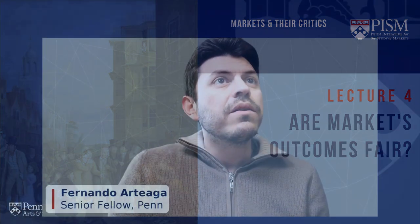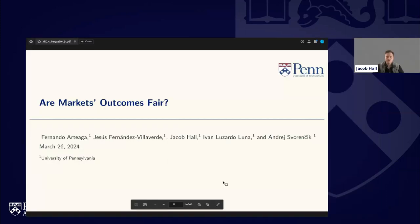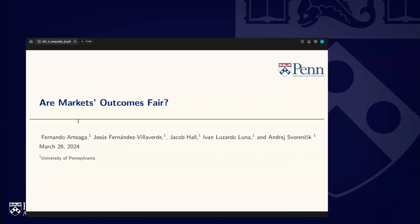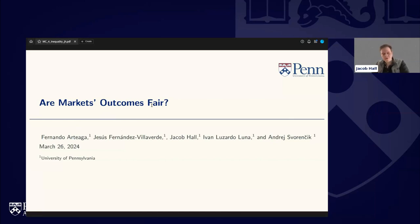Thank you everyone for attending this fourth session of the Markets Under Critics online course. Today we have Jacob Hall, a postdoctoral fellow at the Penny Initiative for the Study of Markets at the Department of Economics. He will be talking about whether markets are fair in their outcomes — inequality and other aspects. The question on the table is: are market outcomes fair? We'll go at this a couple of ways: thinking about what some market outcomes are, what we mean by fair, and then trying to answer the whole question throughout the presentation.